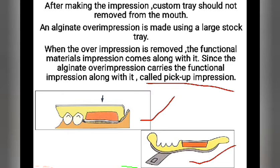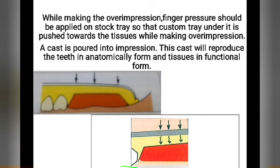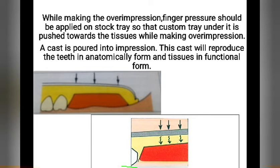An over-impression of alginate is taken using a large stock tray. When the over-impression is removed, the functional impression material comes along with it, which is known as the pickup impression. While making the over-impression, finger pressure should be applied on the stock tray so the custom tray under it is pushed towards the tissue. A cast is then poured into the impression; the cast reproduces the teeth in anatomical form and the tissues in functional form.